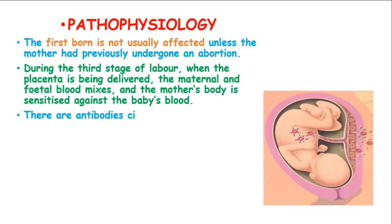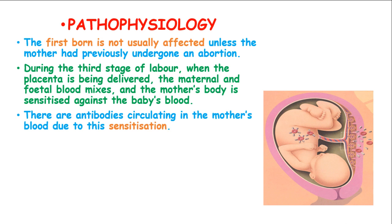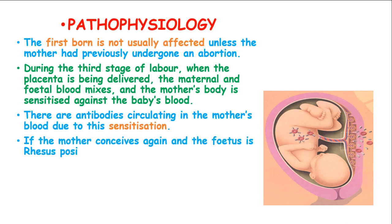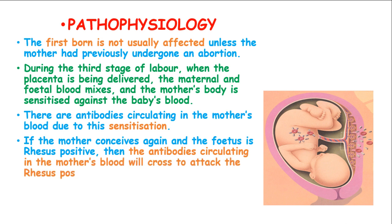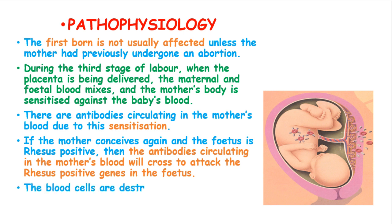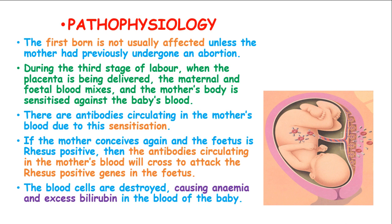There are antibodies circulating in the mother's blood due to this sensitization. If the mother conceives again and the fetus is Rhesus positive, the antibodies circulating in the mother's blood will attack the Rhesus positive genes in the fetus, and the blood cells are destroyed, causing anemia and excess bilirubin in the blood of the baby.